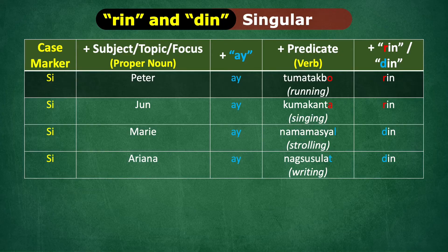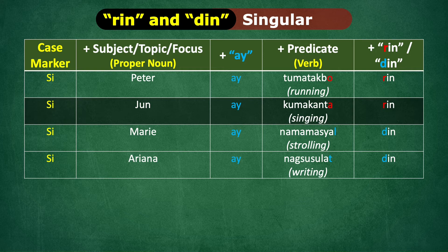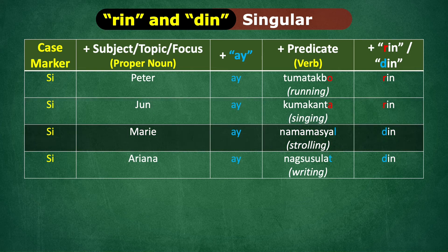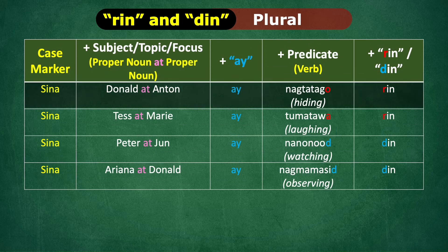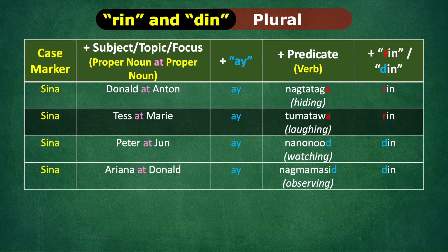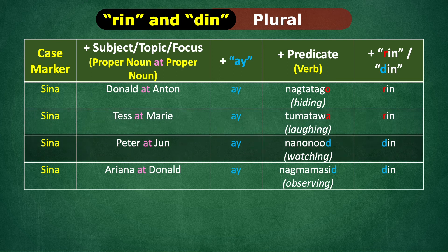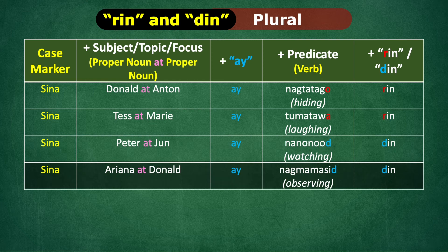On to our examples. Let's see if you can get the meaning of these sentences. Si Peter ay tumatakbo rin. Si June ay kumakanta rin. Si Marie ay namamashel din. Si Ariana ay nagsusulat din. Let us try the plural form. Sina Donald at Anton ay nagtatago rin. Sina Tess at Marie ay tumatawa rin. Sina Peter at June ay nanonood din. Sina Ariana at Donald ay nagmamasid din. Unlike adjectives, verbs do not change when used in the plural form.